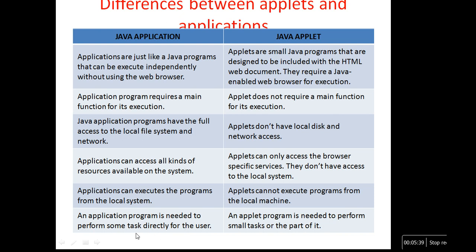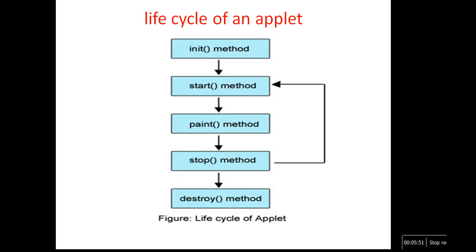The application program is needed to perform some tasks directly for the users, whereas the applet program is needed to perform some small tasks or part of it. The life cycle of an applet has five methods: init, start, paint, stop, and destroy.